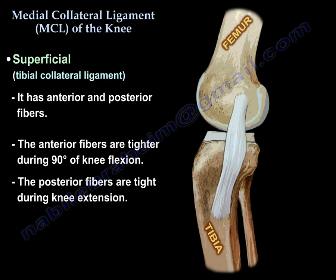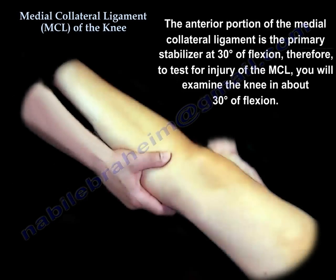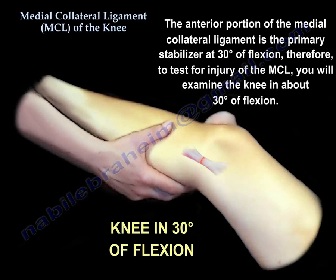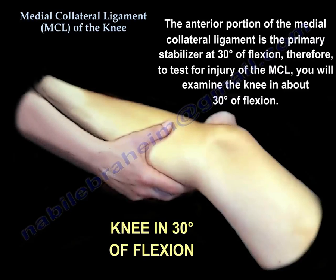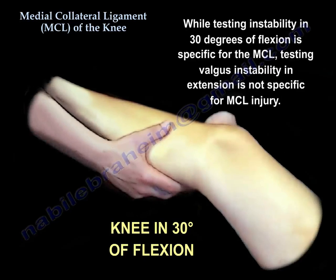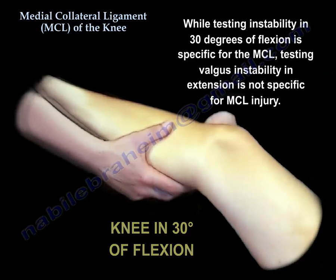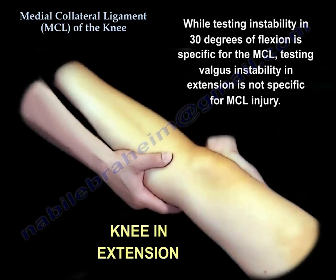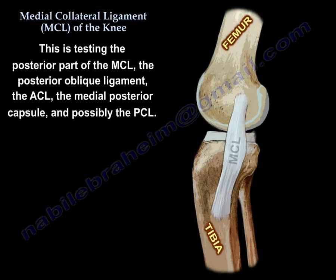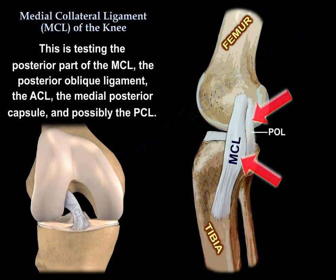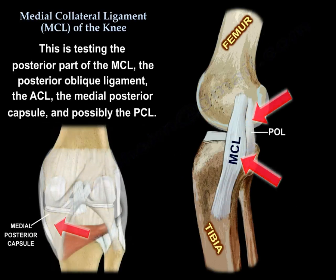The anterior part of the medial collateral ligament is the primary stabilizer at 30 degrees of flexion. Therefore, to test injury of the medial collateral ligament, you examine the knee at about 30 degrees of flexion. Testing instability in 30 degrees of flexion is specific for the MCL, but testing valgus instability in extension is not specific — you are also testing the posterior part of the MCL, the posterior oblique ligament, the ACL, the medial posterior capsule, and possibly the PCL.